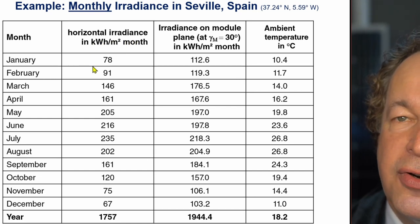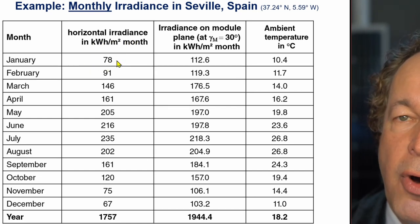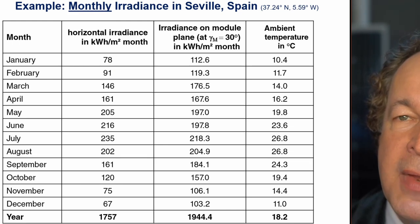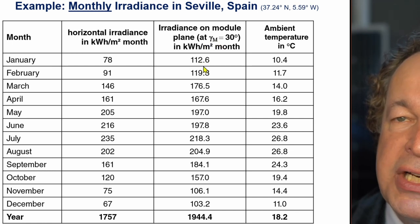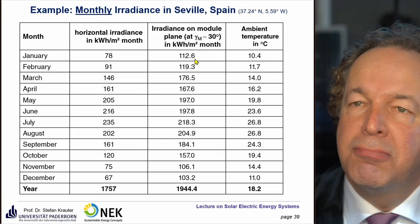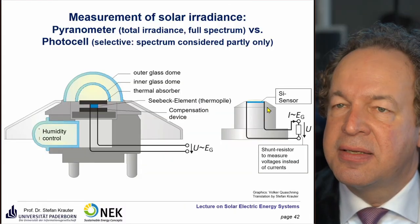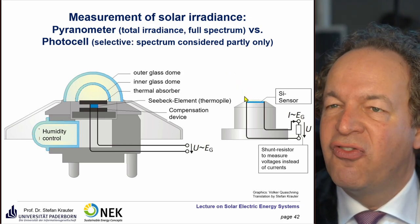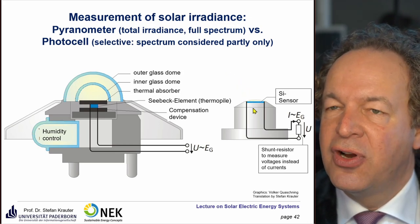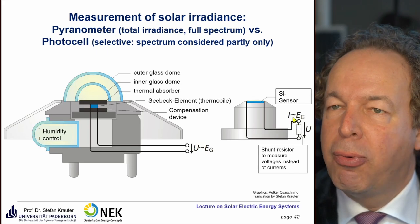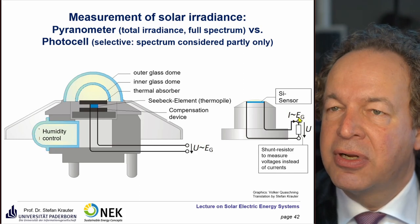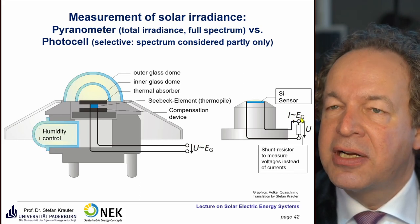If you tilt the module by, for example, 30 degrees, you get considerably higher irradiance during that month — about 30% more. A PV module converts incoming photons into a flow of electrons, and this flow of electrons (electrical current) is directly proportional to the incoming irradiance.